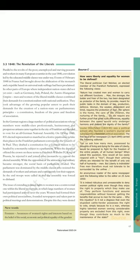Louise Otto-Peters (1819–95) was a political activist who founded a women's journal and subsequently a feminist political association. The first issue of her newspaper, the 21st of April 1849, carried the following editorial: 'Let us ask how many men, possessed by thoughts of living and dying for the sake of liberty, would be prepared to fight for the freedom of the entire people, of all human beings? When asked this question, they would all too easily respond with a yes, though their untiring efforts are intended for the benefit of only one half of humanity — men. But liberty is indivisible. Free men therefore must not tolerate to be surrounded by the unfree.' An anonymous reader of the same newspaper sent the following letter to the editor on the 25th of June 1850: 'It is indeed ridiculous and unreasonable to deny women political rights even though they enjoy the right to property which they make use of. They perform functions and assume responsibilities without however getting the benefits that accrue to men for the same. Why this injustice? Is it not a disgrace that even the stupidest cattle herder possesses the right to vote, simply because he is a man, whereas highly talented women owning considerable property are excluded from this right, even though they contribute so much to the maintenance of the state.'